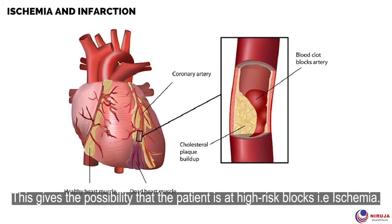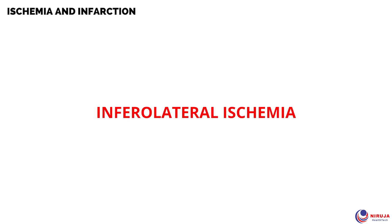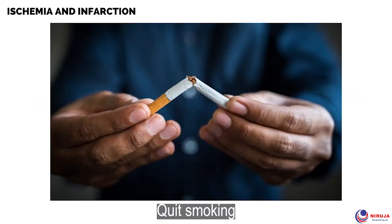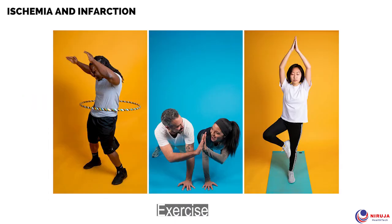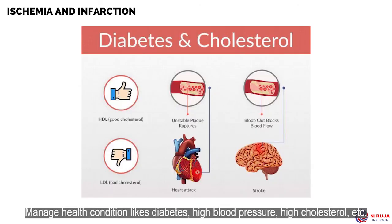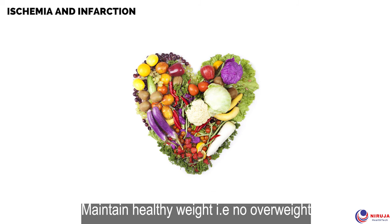Ischemia can be prevented by changes in lifestyle: quit smoking, exercise, decrease stress, manage health conditions like diabetes, high blood pressure, and high cholesterol. Maintain a healthy weight — avoid being overweight — and eat a healthy diet.